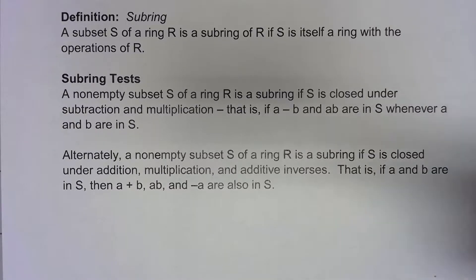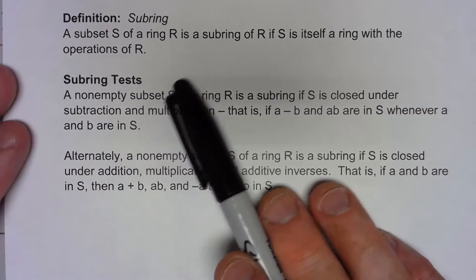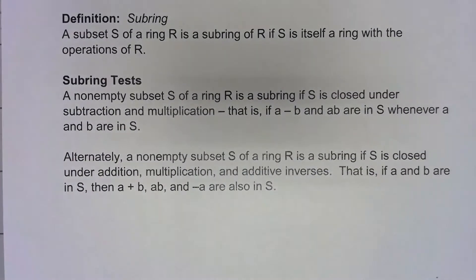Just like we have subgroups for groups, we have subrings for rings, and it's exactly what you'd expect. You've got a subset of a ring that is itself a ring. If that happens, you've got a subring.